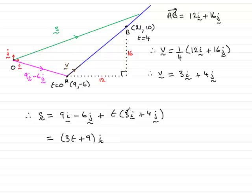And as for the J components, we've got 4T here and minus 6J there. So we can say that that is 4T minus 6 in the J direction.